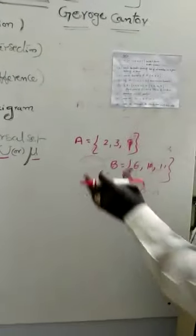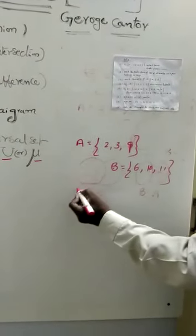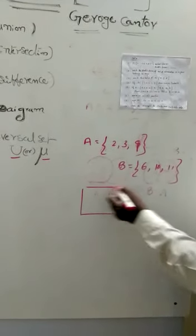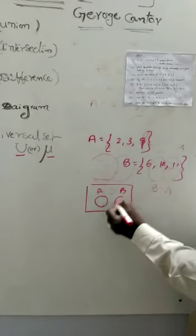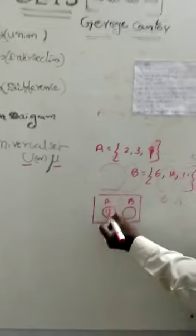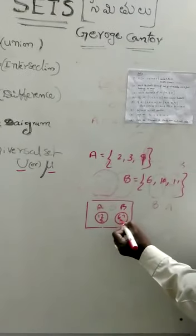So you have to write like this: this is A, this is B. There are no common elements - 1, 2, 5, 6, 7, 8. There is no common element. For example, this one is also an example.